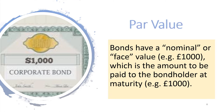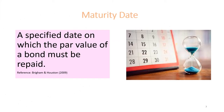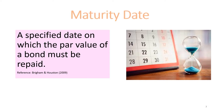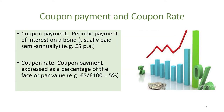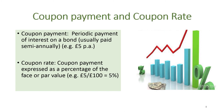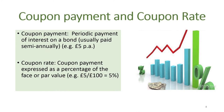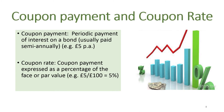The par value generally represents the amount of money the issuer borrows and promises to repay on the maturity date. Bonds generally have a specified maturity date on which the par value must be repaid. Most bonds are issued with maturities of 10 to 30 years. The coupon payment is the specified dollar amount of interest paid periodically. Coupon interest is usually paid semi-annually. The coupon rate on a bond represents the percentage of the bond's par value that will be paid.